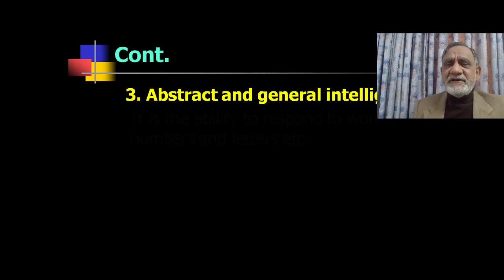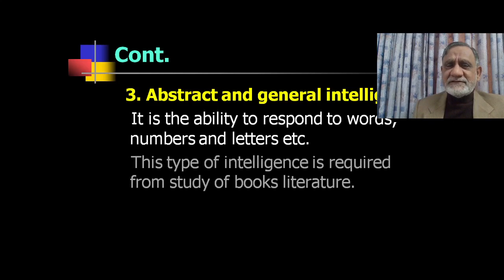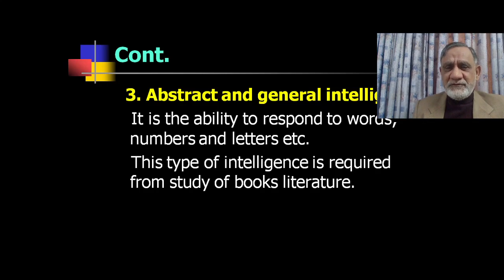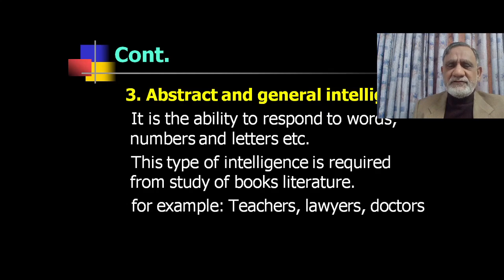The third type is abstract and general intelligence — it is the ability to respond to words, numbers, and letters. This type of intelligence is required for the study of books, literature, etc. Quickly understanding something you read and connecting it — this type of intelligence is called abstract and general intelligence. Teachers, doctors, professors, highly educated engineers — these people have this ability in greater measure.